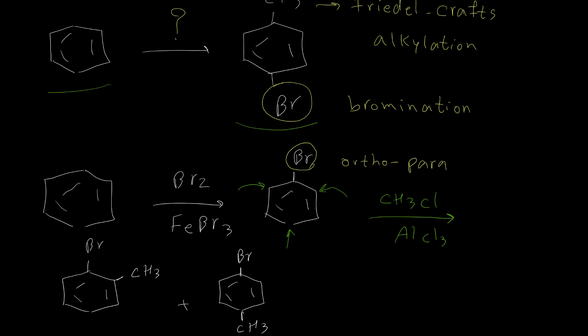After this two-step sequence, we can synthesize 4-bromo-toluene. Of course we have the ortho-bromo-toluene as well, but we can purify it. In most synthesis problems, if we have an ortho product in addition to para, we can separate them easily.